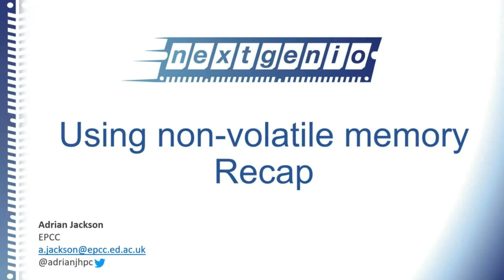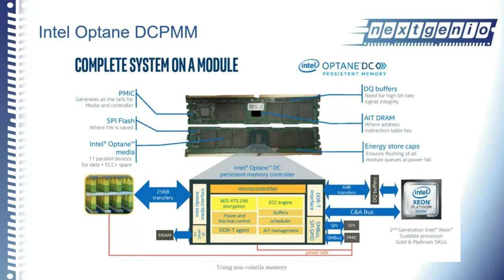Let's get started. Thanks again for coming along to this second half of this online course in using non-volatile memory. To start off, I'll recap what we discussed last week. We started talking about Intel Optane memory modules called DCPMMs, which are a version of non-volatile or persistent memory you can use inside memory channels to give you very large capacity and very high performance.